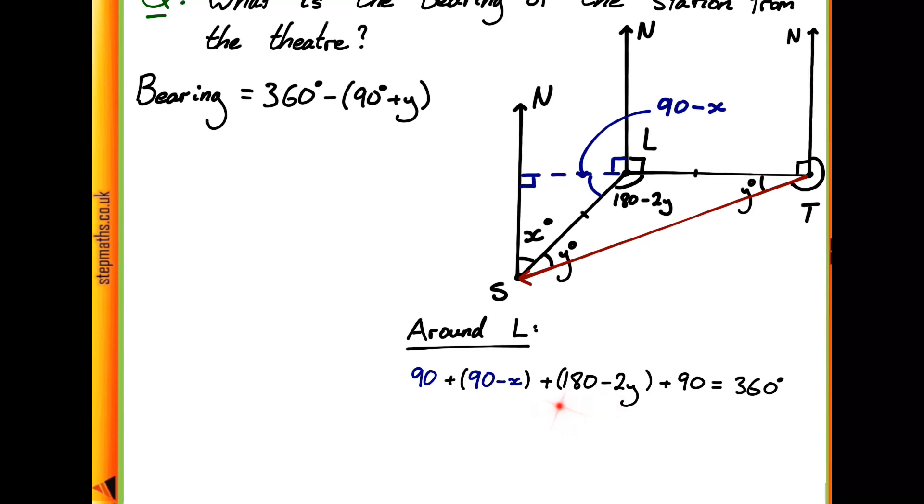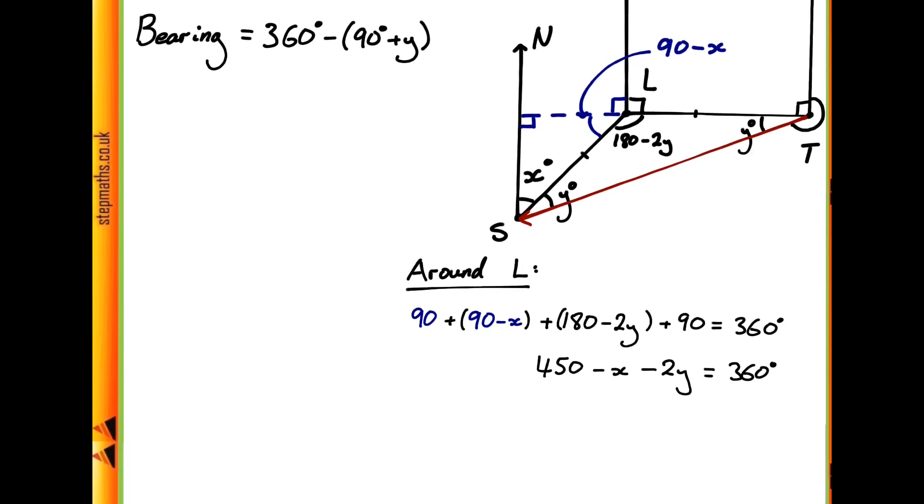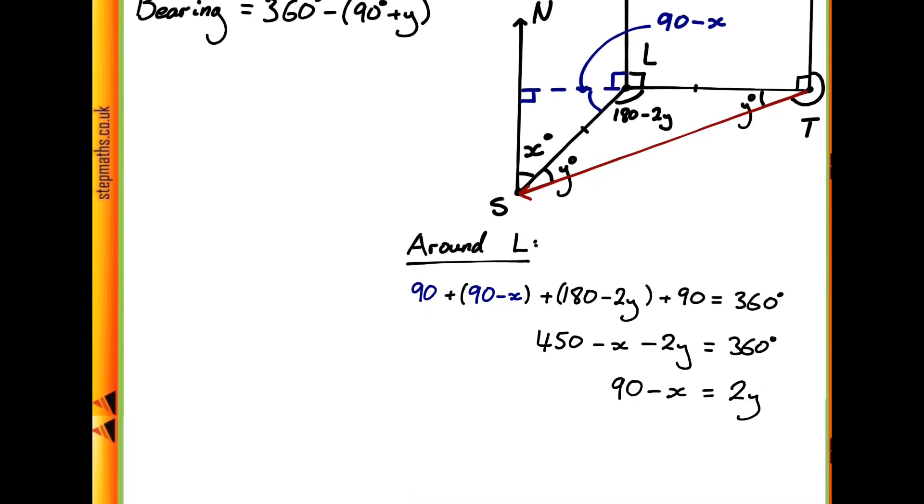So if we collect together all the terms on the left hand side, then this is going to become the simpler expression 450 minus x minus 2y equals 360 degrees. Now of course we can simplify this a little bit further by taking the 360 away from 450 and moving y onto the other side, since we want to find an expression for y to substitute into our bearing.